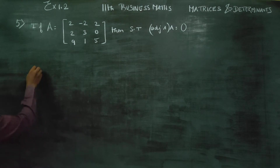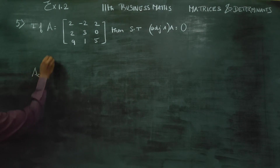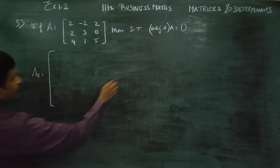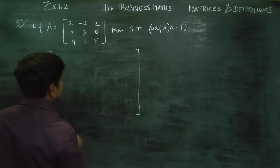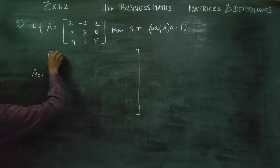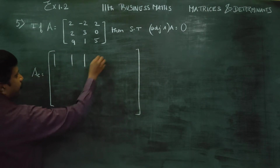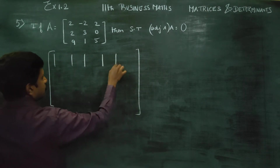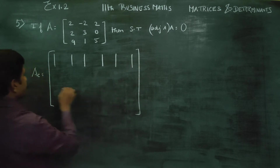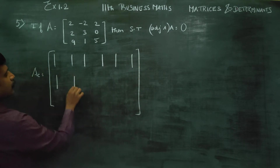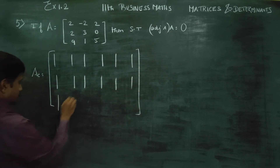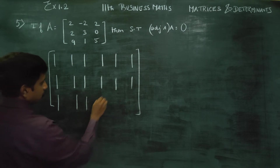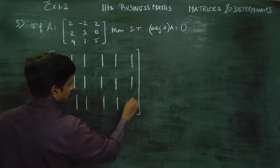How to find the cofactor matrix? For matrix A, you have to write the 9 elements: 1, 2, 3, 4, 5, 6, 7, 8, 9. That gives a 3×3 matrix with 9 minus 1 = 8 cofactors to compute.